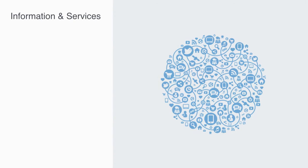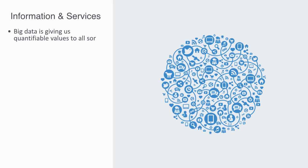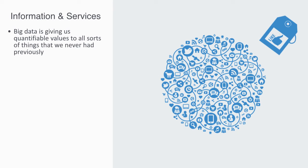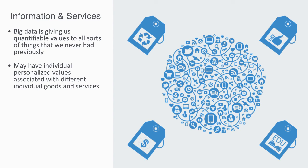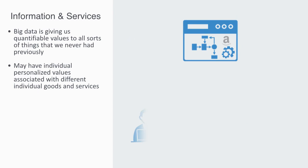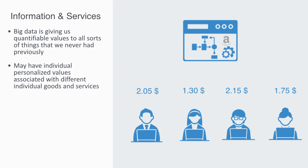Information technology, in the form of big data, is giving us quantifiable values to all sorts of things we never had previously — how many people follow you on Twitter, which is social capital; how environmentally friendly a product is and how much people are prepared to pay for that, which is ecological capital. In big data, we have the capacity to reveal the value of things, and we may soon have individual, personalized values associated with different goods and services. Amazon already uses sophisticated algorithms to adjust the price of products for different customers, depending on information about your profile, what device you are using, what time of day it is, and so on.